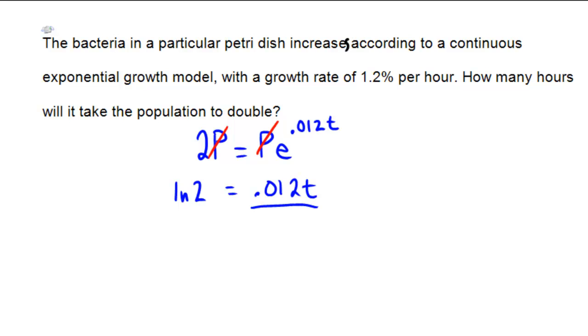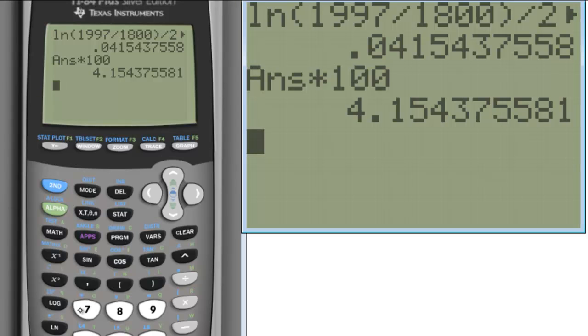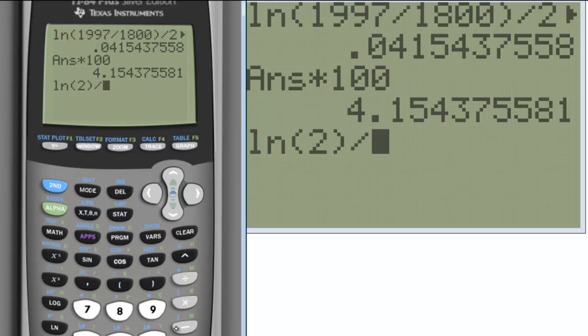Our goal is to isolate the t, so let's divide by 0.012. And once we divide by 0.012, that's going to isolate t by figuring out what ln of 2 divided by 0.012 is. So we want ln of 2 divided by 0.012, the interest rate or growth rate.